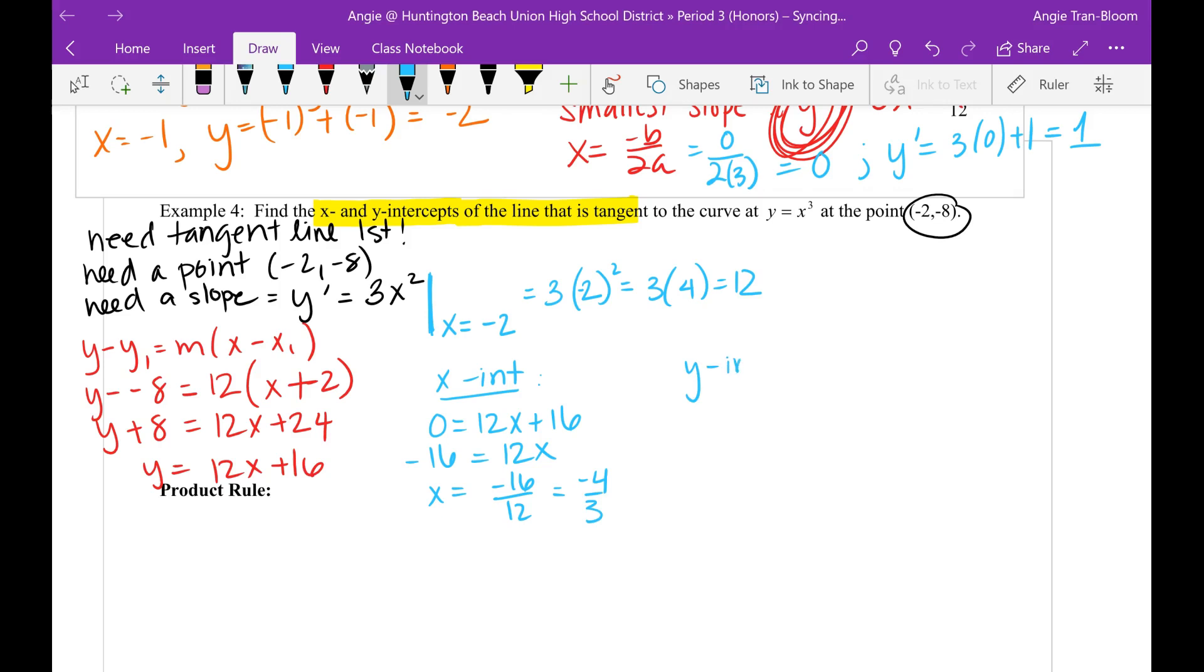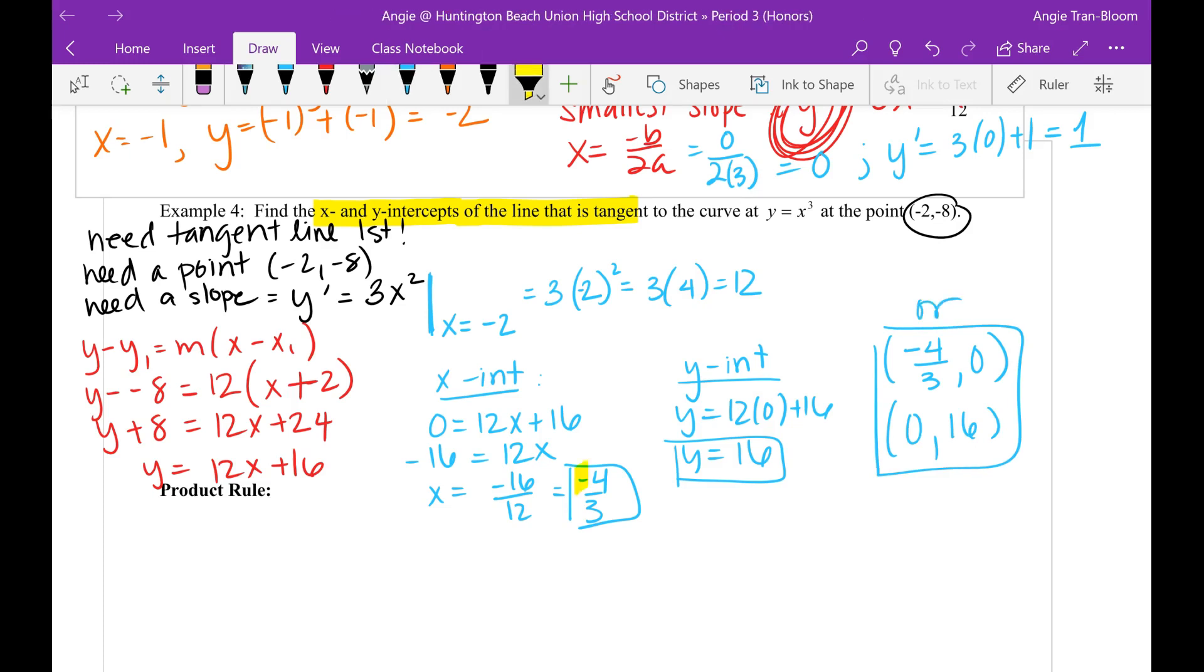Y intercept is when x is 0. So when x is 0, y equals 12 times 0 plus 16, so y equals 16. These two are not one point. You can box them up as is, or you can write them as: x intercept is negative 4 over 3 comma 0. Y intercept when x is 0, so 0 comma 16. You can write it like this if you choose to, or just box it up.